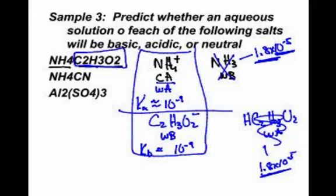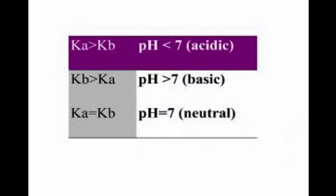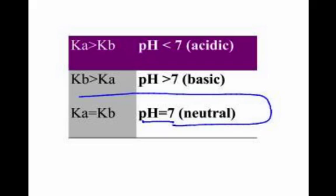If the Ka equals the Kb, the pH is seven, so it's neutral. We have a neutral one here. Our second chemical is ammonium cyanide.